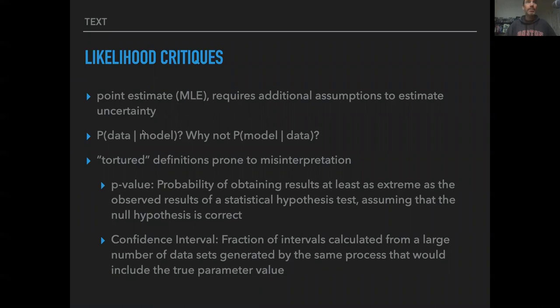But there are some possible critiques of likelihood. So one is that likelihood by itself gives you a point estimate, your maximum likelihood estimate. And then doing anything with that maximum likelihood estimate requires that you make additional assumptions if we want to estimate the uncertainty. So if we want to test a hypothesis, say that a slope is bigger than zero or two things are different from each other, we can't do that from the maximum likelihood estimates alone because they're always different. We need to invoke some estimate of the uncertainties. And we did that in this class primarily focusing on bootstrapping.